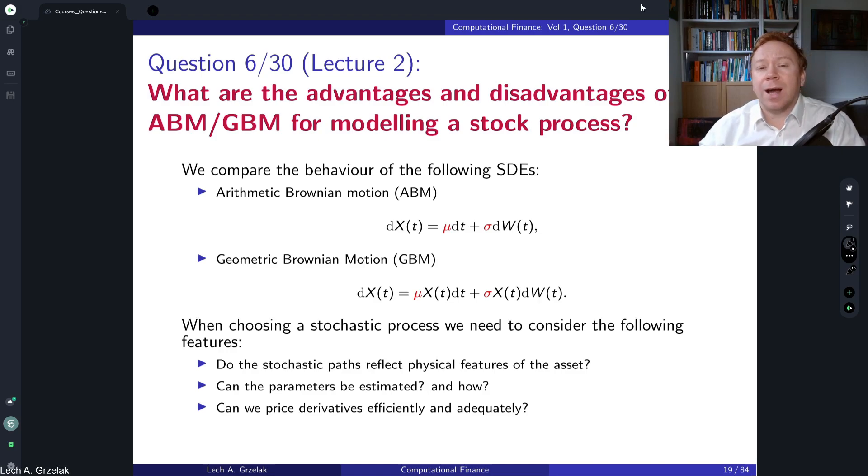The question of today is what are the advantages and disadvantages of using arithmetic Brownian motion or geometric Brownian motion for modeling a stock process. This question is based on question number two and also resembles the one we have seen already two sessions ago where we discussed whether arithmetic Brownian motion can be used for pricing of options.